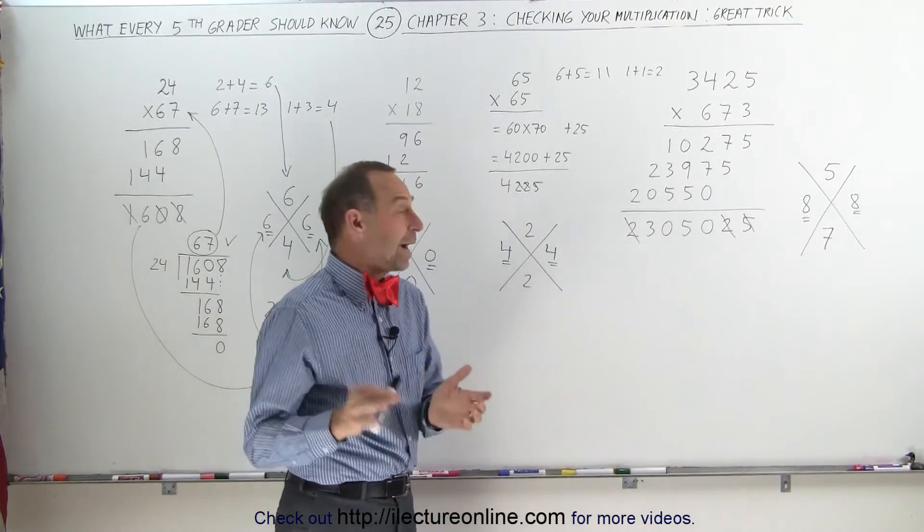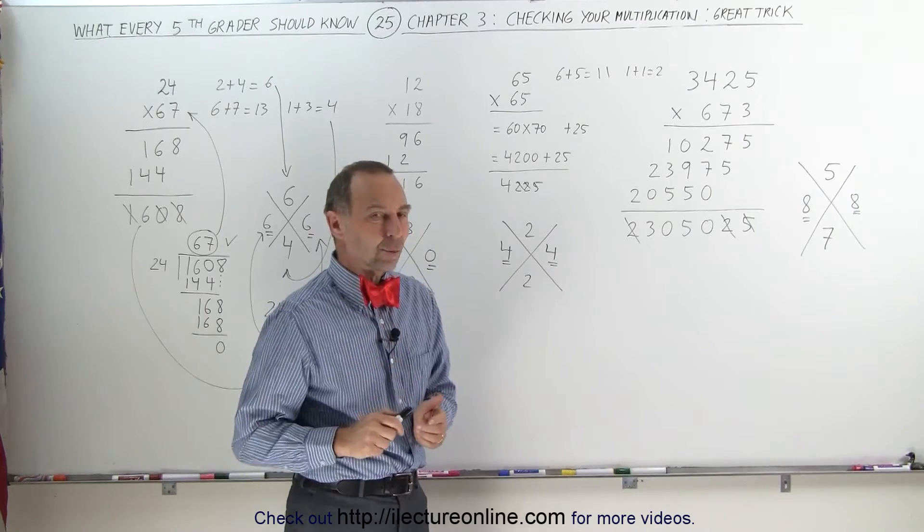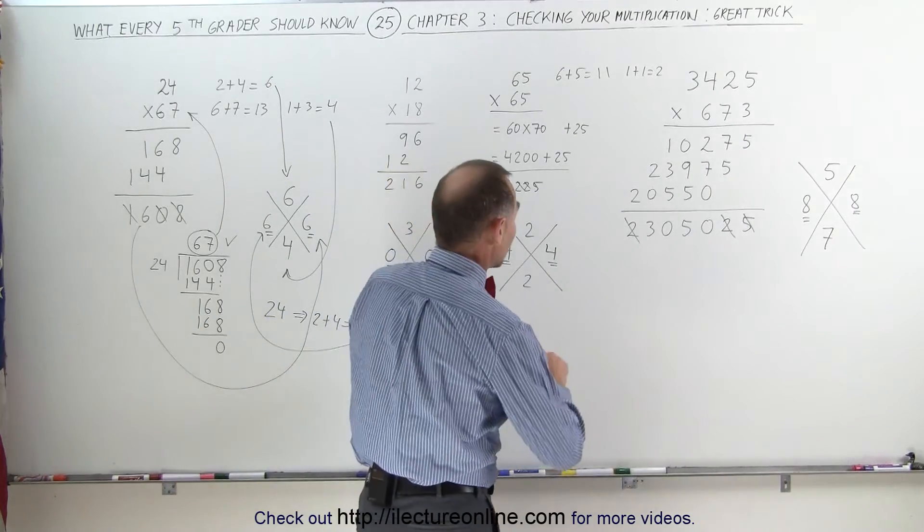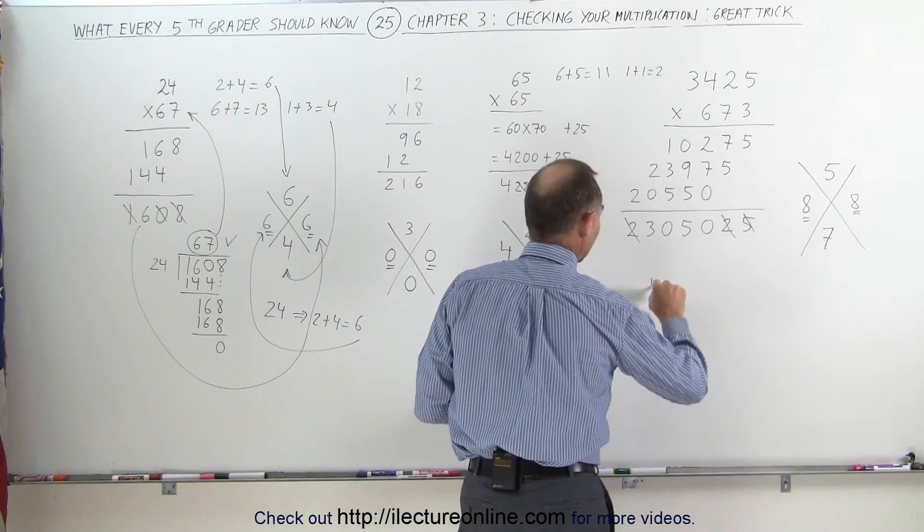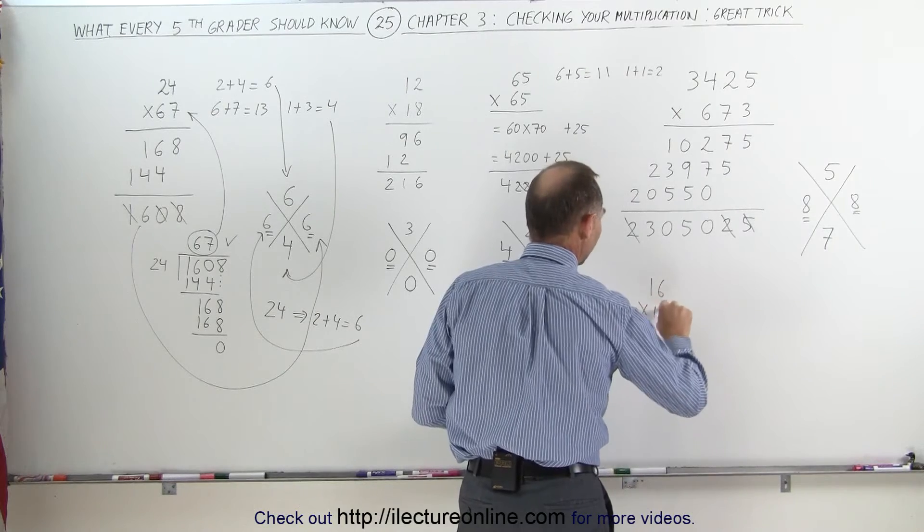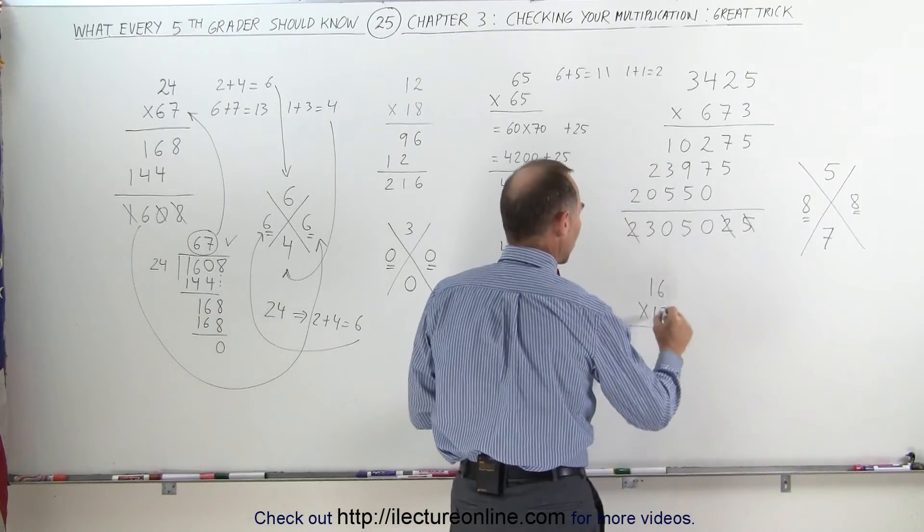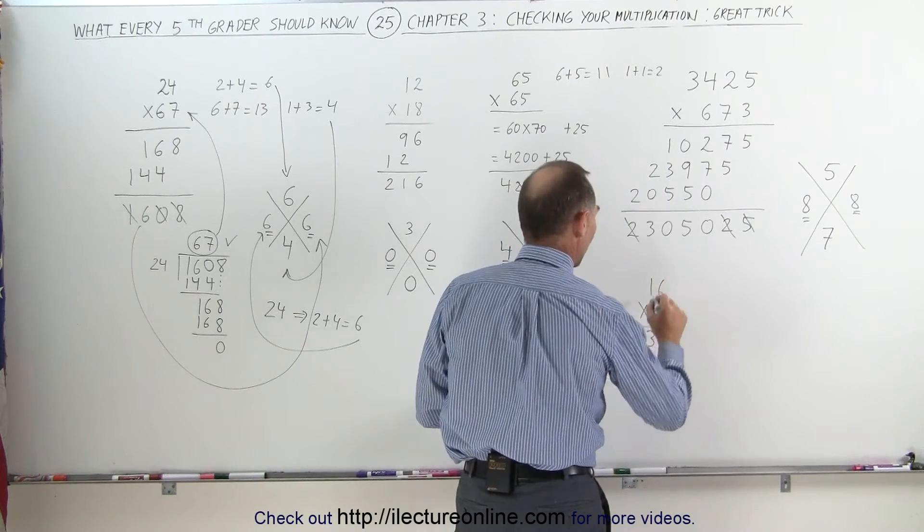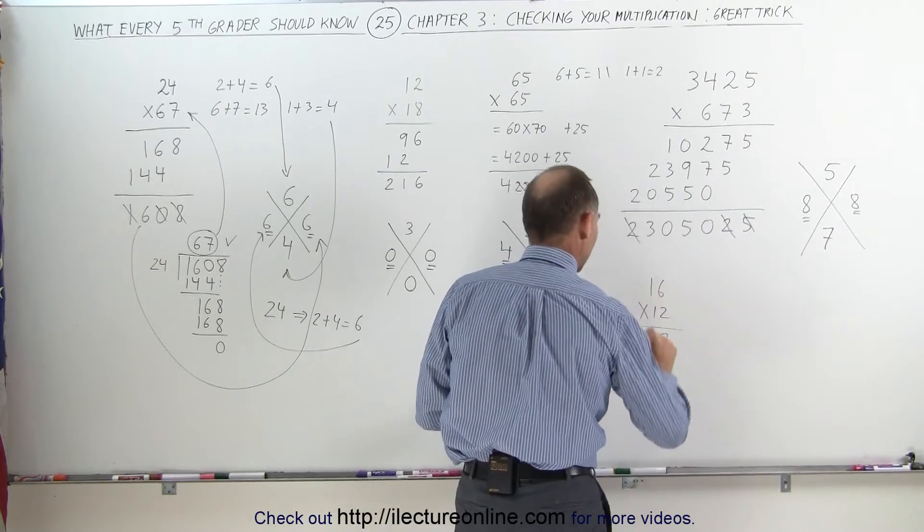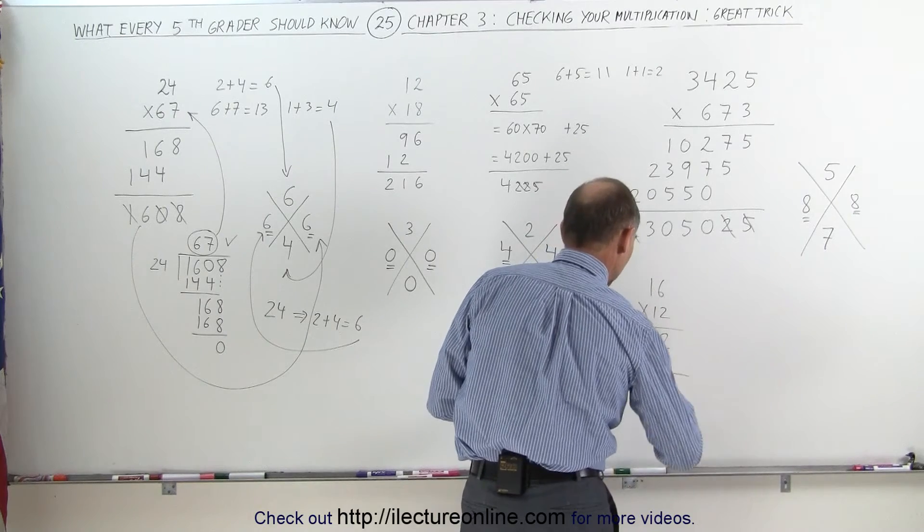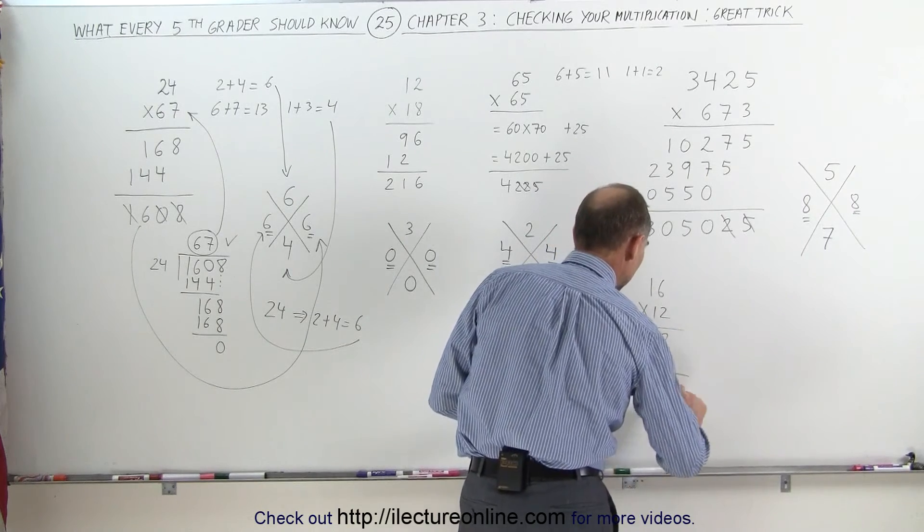Now let's illustrate why we say that sometimes this trick doesn't work. For example, if we take the multiplication, how about 16 times 12? 2 times 6 is 12. Write down the 2, remember 1. 2 times 1 is 2, plus 1 is 3. 1 times 6 is 6. 1 times 1 is 1. Add these together, you get 192.